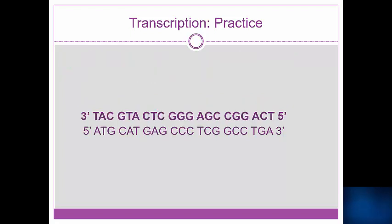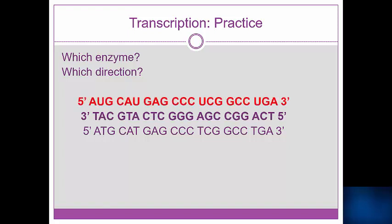Yes, the top strand running in the 3' to 5' direction. When transcription begins, what enzyme will make the RNA transcript? And in which direction will the RNA transcript be synthesized? Pause the video here and write down what the RNA transcript will look like. Yes, the RNA transcript was synthesized in the 5' to 3' direction by RNA polymerase.